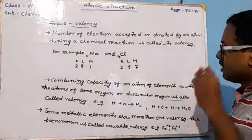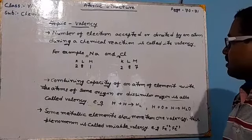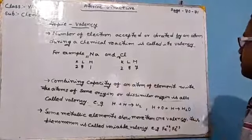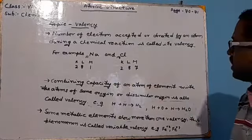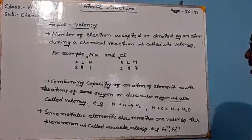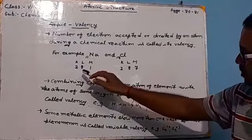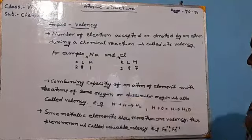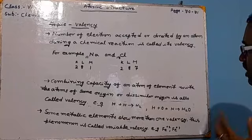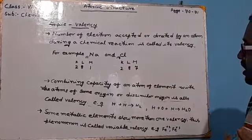For example, sodium and chlorine. The atomic number of sodium is 11 and the atomic number of chlorine is 17. That means the electronic configuration of sodium is 2, 8, 1 and the electronic configuration of chlorine is 2, 8, 7.